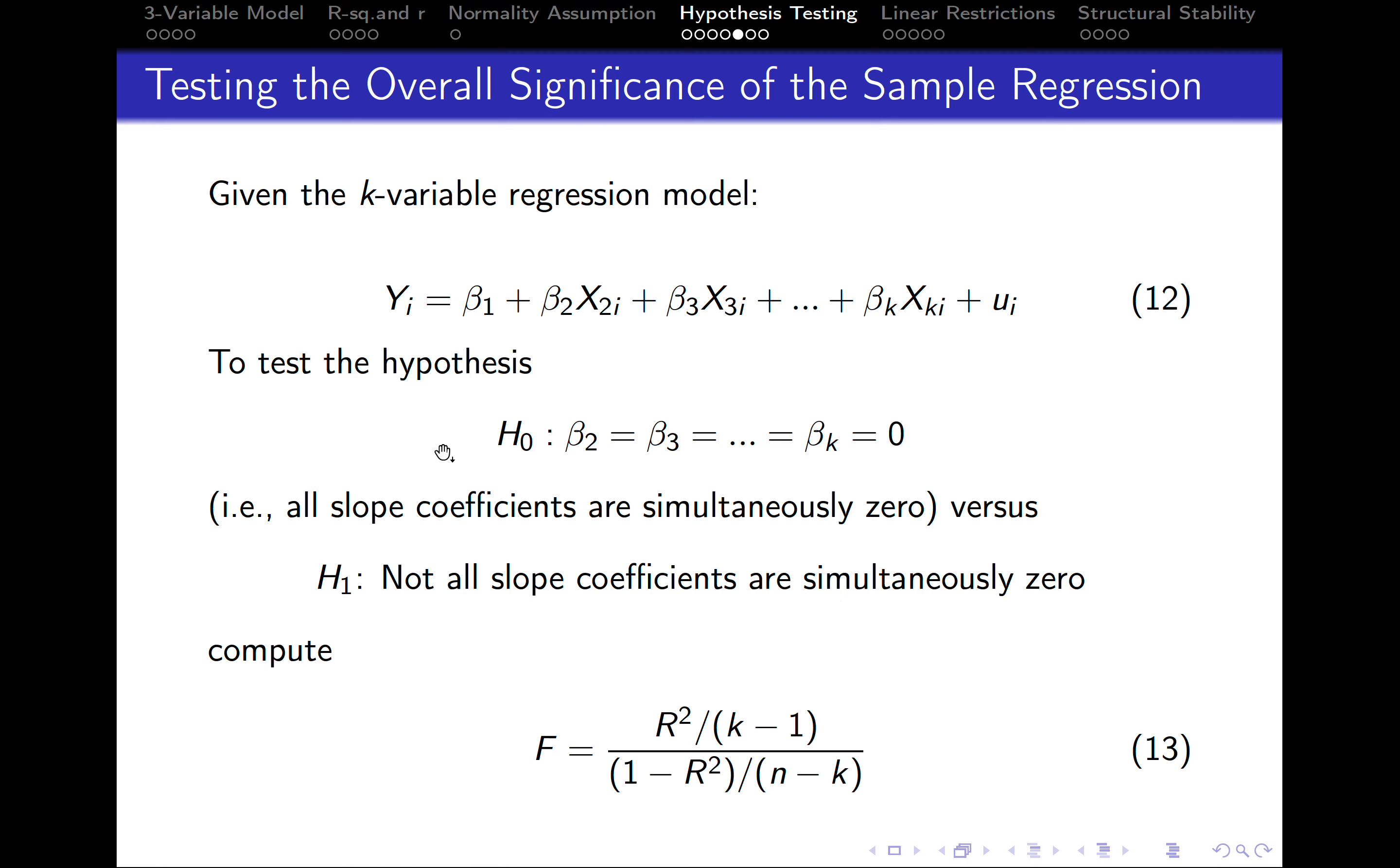To be able to test this set of hypotheses, we need to compute something called the f-test. So we take r squared, the coefficient of determination from the original model. We divide it by k minus 1, where k, as always, is the number of parameters.